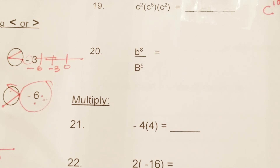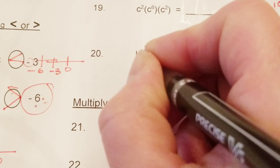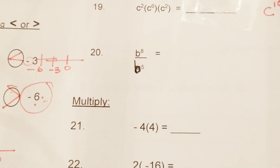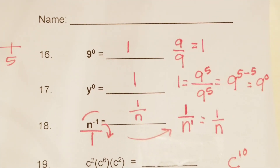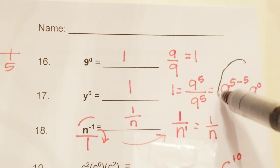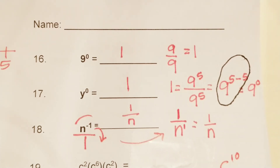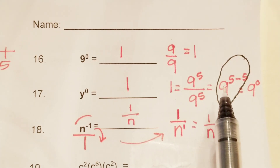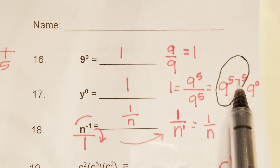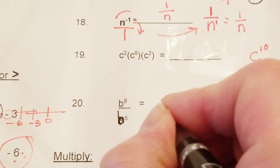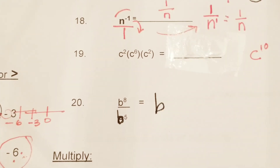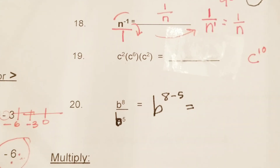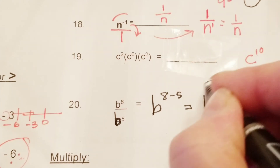Number 20 — I have a correction. This should actually read b to the eighth power divided by a lowercase b to the fifth power. Sorry about that. So just like we learned, when you divide you keep the base and raise it to the power on the numerator minus the power on the denominator. So this is b to the 8 minus 5, which gives you b to the third power.